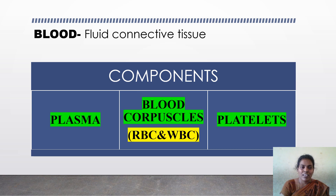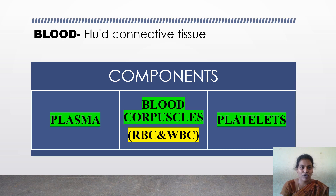In an adult human being, nearly 6.8 liters of blood is present. It is somewhat alkaline in nature, with a pH value of 7.4. Blood contains three important components: first, plasma; second, blood corpuscles (that means blood cells); and third, blood platelets.